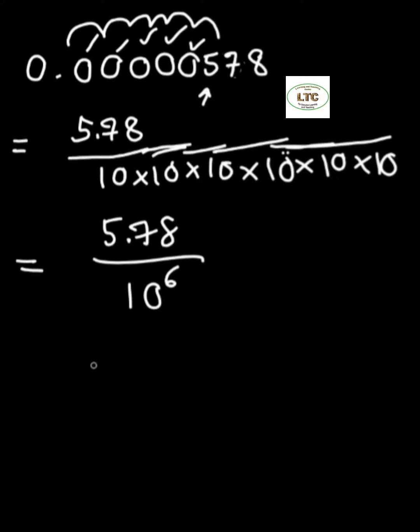Therefore, you divide by 10 to the power 6. 1 divided by 10 to the power 6 equals 10 to the power 6. So you have to write this way. This is the scientific notation.